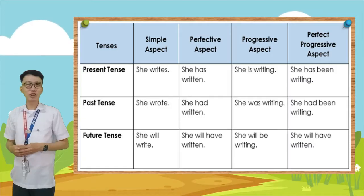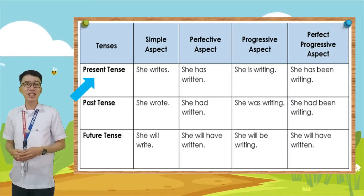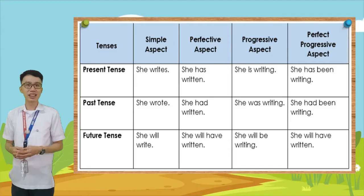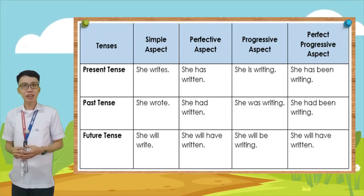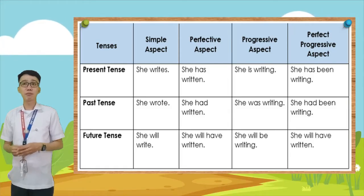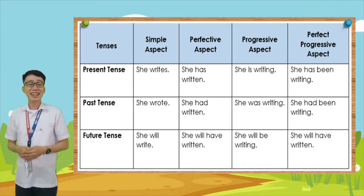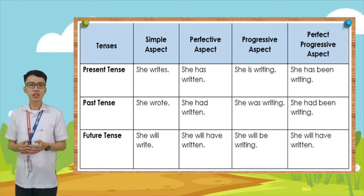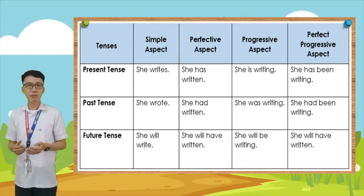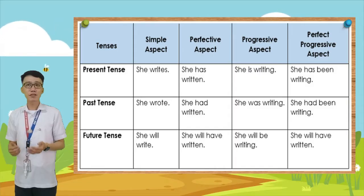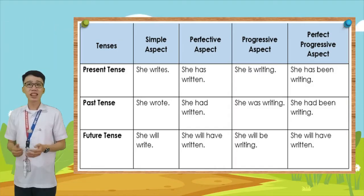Let's start with present tense. In present tense, we have simple aspect — for example, 'she writes.' In perfect aspect — 'she has written.' In progressive aspect — 'she is writing.' In perfect progressive aspect — 'she has been writing.'